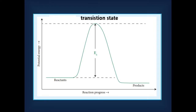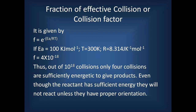This diagram shows that the reactant which has the activation energy Ea should reach the transition state, and after the transition state it goes to product. To calculate the fraction of effective collisions, small f, the expression is: f = e^(−Ea/RT). If Ea = 100 kJ mol⁻¹ and T = 300 K (R = 8.314 J K⁻¹ mol⁻¹), we get f = 4 × 10⁻¹⁸. This shows that out of 10¹⁸ collisions, only 4 are sufficiently energetic to give the product.